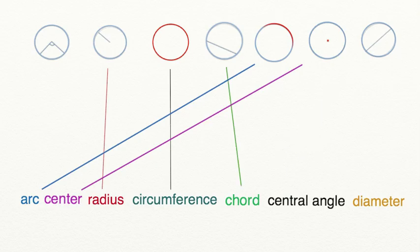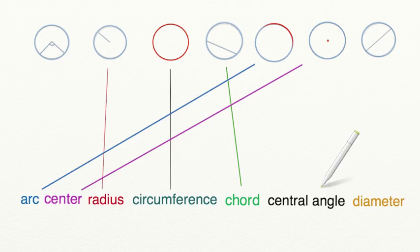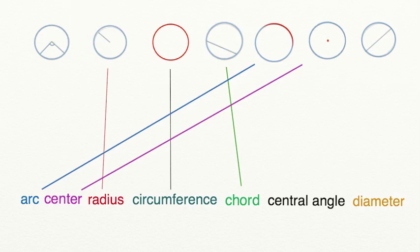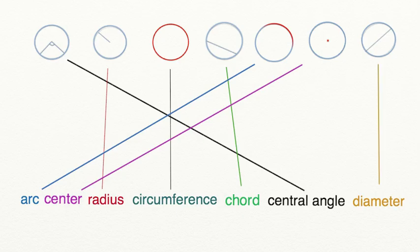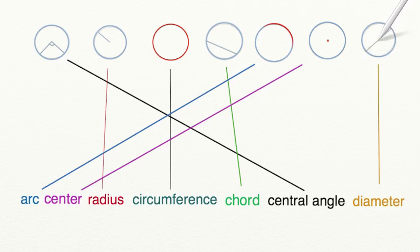Alright, we have two more words left. Let's look for the central angle. The central angle is an angle whose vertex is at the center of the circle. We have two pictures left, and one represents an angle where the vertex is at the center of the circle, so that picture represents our central angle. And lastly, that leaves the diameter. The diameter is a straight line that reaches from one edge of the circle to the other, which passes through the center.